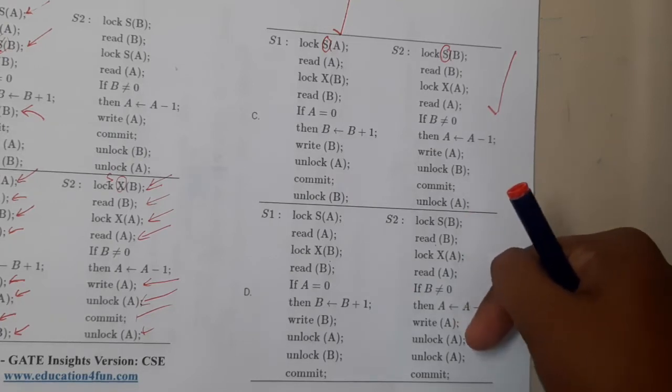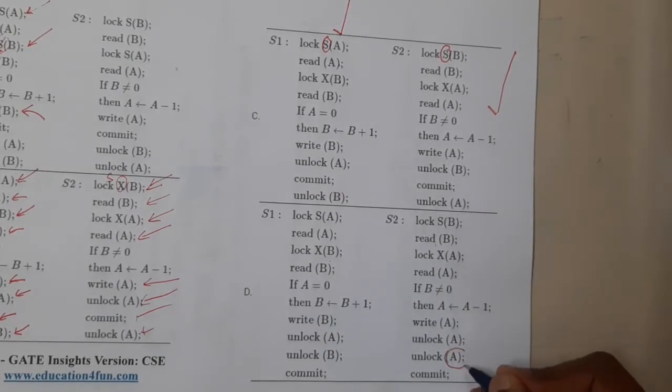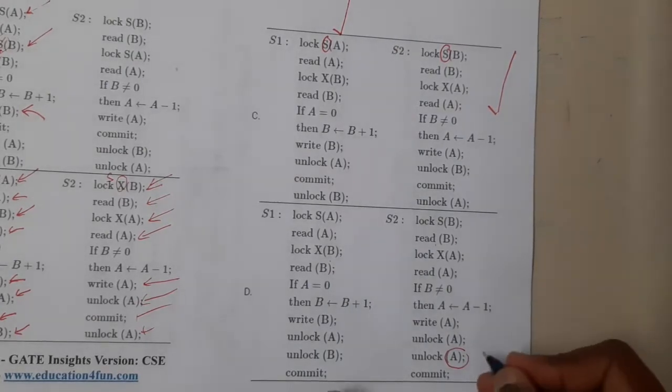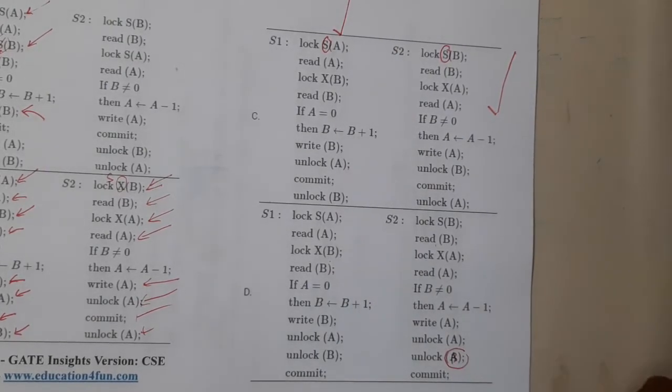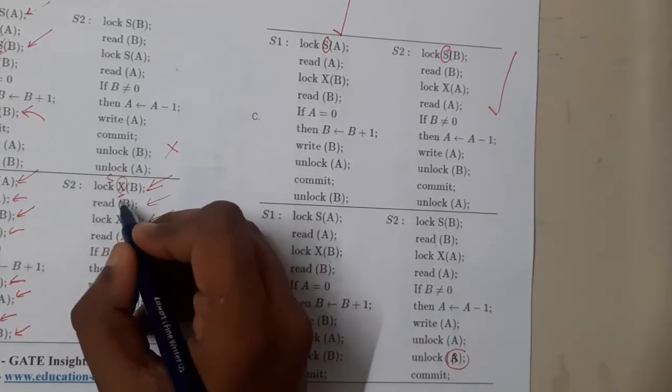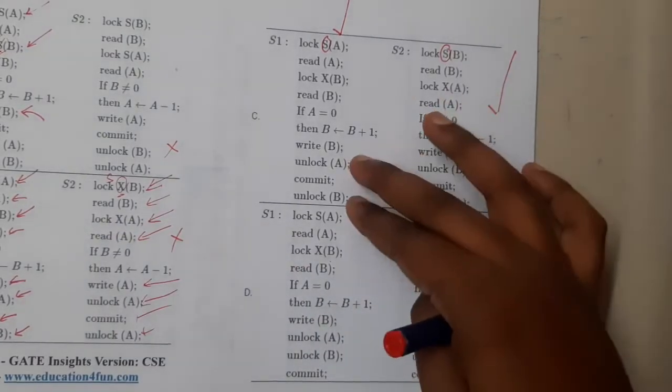We read A, we wrote A, we unlocked A, we... here is our issue. We unlocked A twice. I think it might be a printing mistake, most probably it should be unlock B only. We can conclude that option A is wrong, option B is wrong because here instead of this exclusive lock we can use a shared lock. The only difference between these two is that these two statements are shuffled. Will there be any issues if the statement has been shuffled?